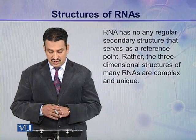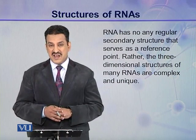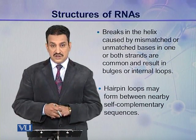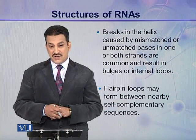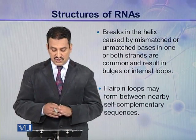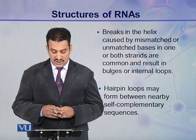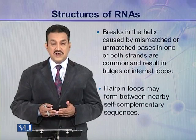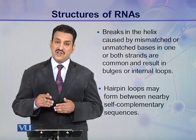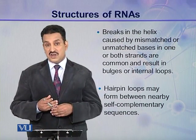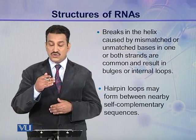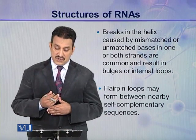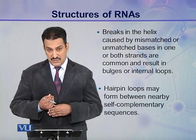The three-dimensional structures of many RNAs are complex and unique. Breaks in the helix caused by mismatched or unmatched bases in one or both strands are common, and these breaks result in bulges or internal loops. In an RNA molecule, there are complementary regions, but there are also breaks where one strand is not complementary to the other. At these points, either a bulge or a loop is formed.